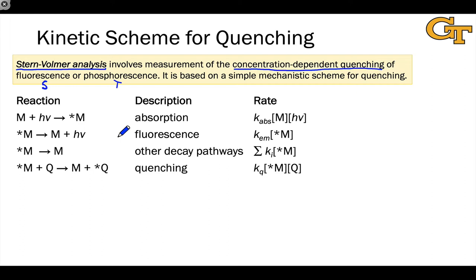The starting point for understanding Stern-Volmer analysis is the mechanistic scheme shown on this slide. To understand this, we're thinking in very broad terms about what an excited state can do. The first step is generation of the excited state through absorption of a photon by M to form M*, the excited state. This has a rate proportional to the concentration of M, the concentration of photons impinging on the sample, and the intrinsic rate constant for absorption. From there, the excited state M* can do three basic things.